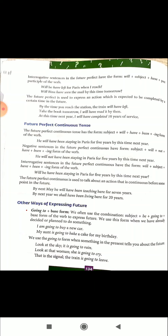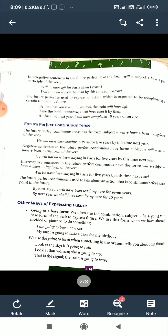We often use the combination subject plus be plus going to plus base form of the verb to express the future. We studied this in the present continuous tense. We use this form when we have already decided or planned to do something in the future. In such cases, we use 'going to' plus base form. For example: 'I am going to buy a new car' — meaning I will buy a new car, but implying it is already decided or planned.